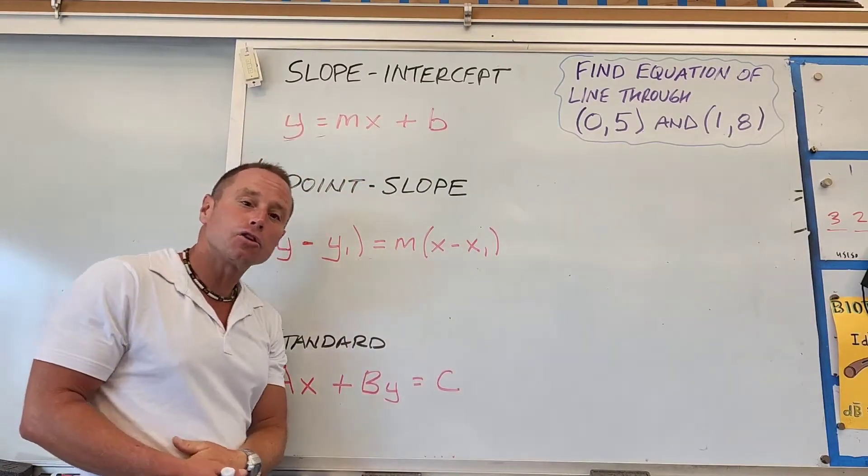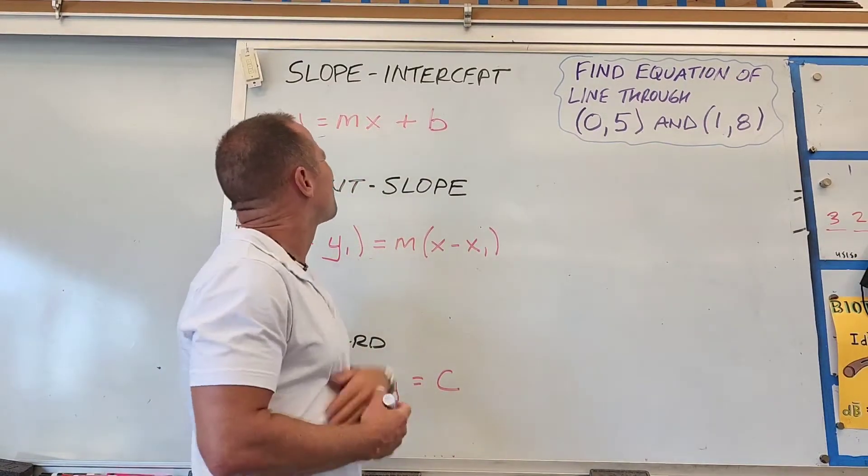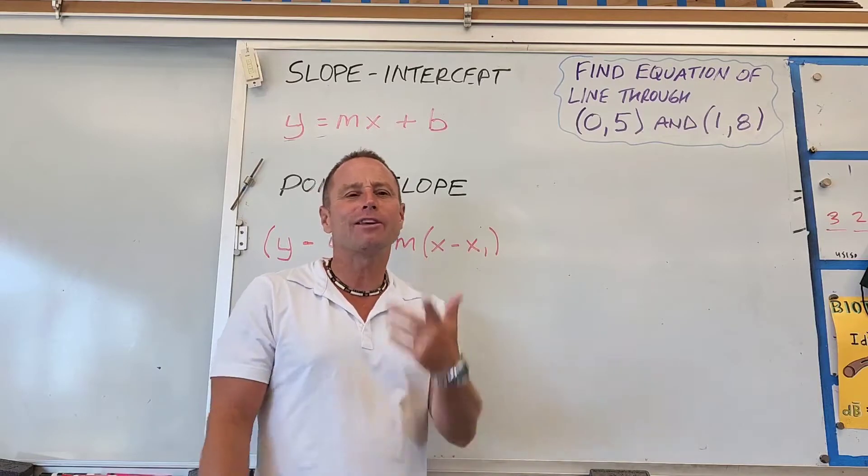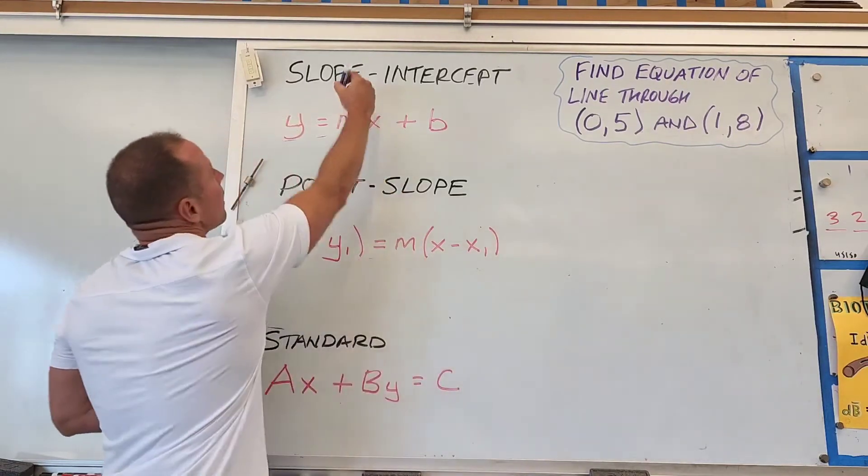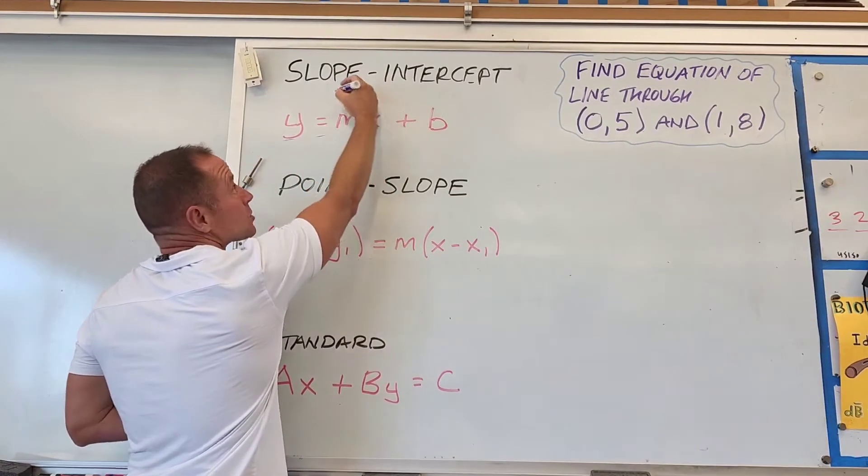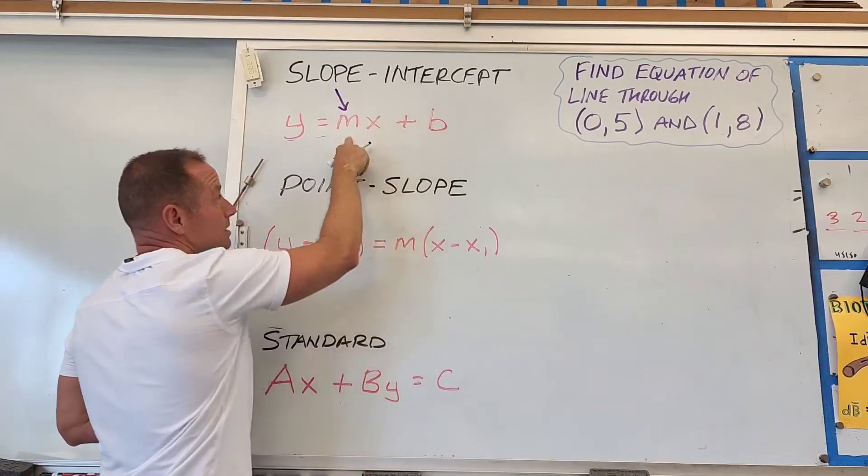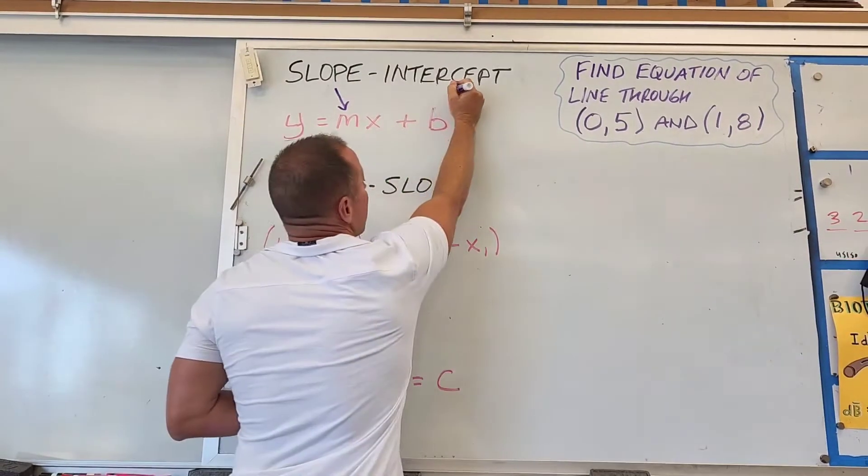The first way is called slope-intercept form. This is the one I've used the most in my career and you'll see it most often. It's called slope-intercept form because m is the slope of the line